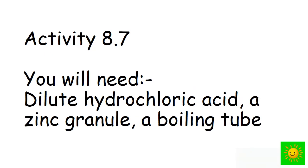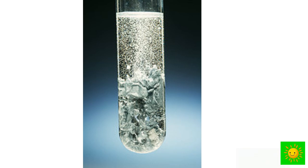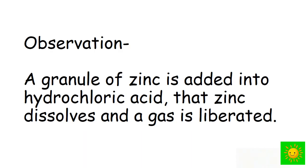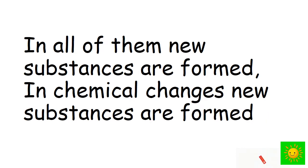Next practical. Dilute hydrochloric acid, a zinc granule, and a boiling tube. Add a little dilute hydrochloric acid into a boiling tube, add the piece of zinc into it. When a granule of zinc is added into the hydrochloric acid, we see that zinc dissolves and gas is liberated. In all of them, new substances are formed. In chemical changes, new substances are formed.